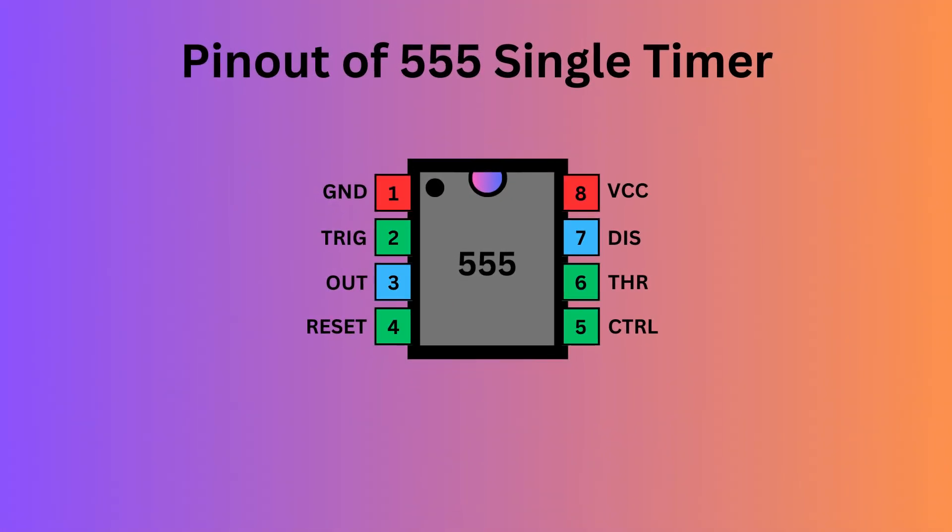The 555 timer IC comes with eight pins. There is a notch or a dot on the chip's body. Pin 1, located at the top left, serves as the ground or ground supply.